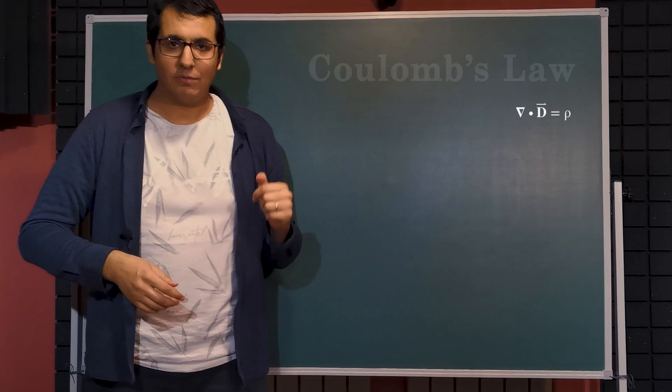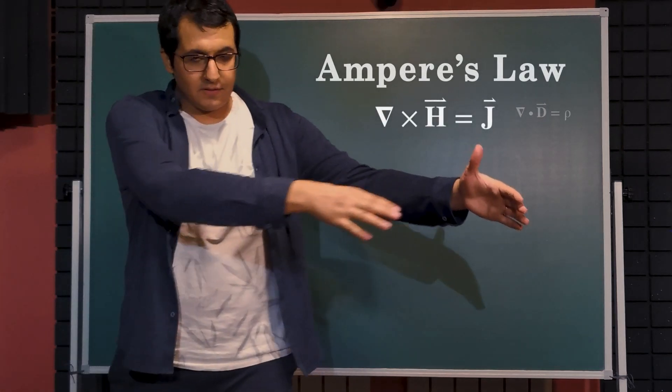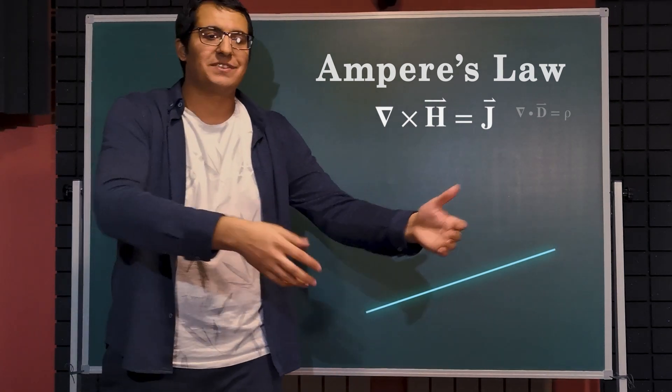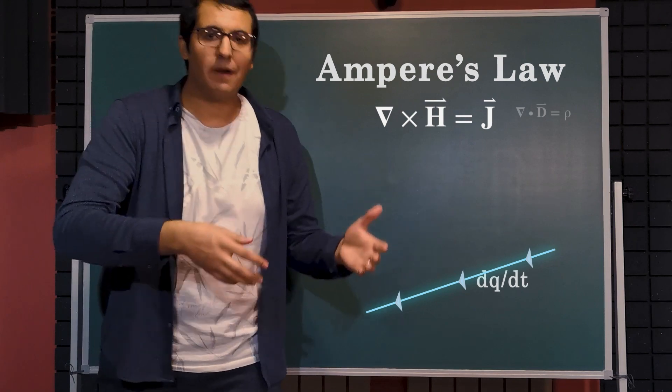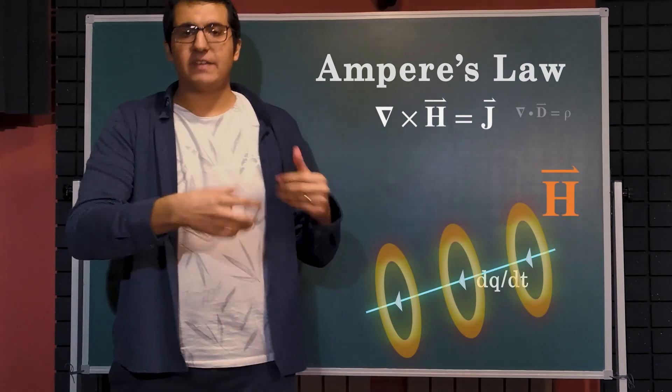And this is our first law. And the second one was Ampere's law, stating that if there is electric current that flows through a line of wire, that will always create a solenoidal magnetic field around it.